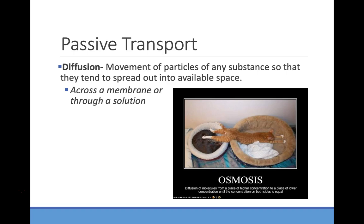In diffusion, a substance or particles moves out of an area of high concentration toward an area of low concentration and into available space. Diffusion can happen either across a membrane or through a solution. One of the differences between osmosis and diffusion is that diffusion can happen in the solution.